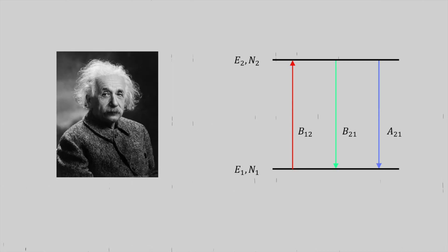So let's start by putting this into math terms. The first person to work this out was Albert Einstein, who described these three processes with the so-called Einstein coefficients.